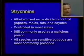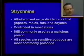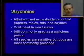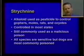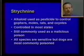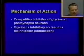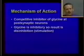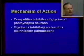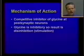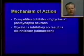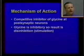Strychnine is an alkaloid used for years to control gophers, moles, rats, and coyotes. Most states control its sale, but it is still used as a malicious poison. All species are sensitive, but dogs are most commonly poisoned. Strychnine acts by inhibiting the action of glycine at postsynaptic neurons in the spinal cord. Glycine is an inhibitory neurotransmitter that controls neuronal firing. By inhibiting glycine — an inhibitory transmitter — the result is disinhibition, which stimulates all muscles innervated by those neurons.